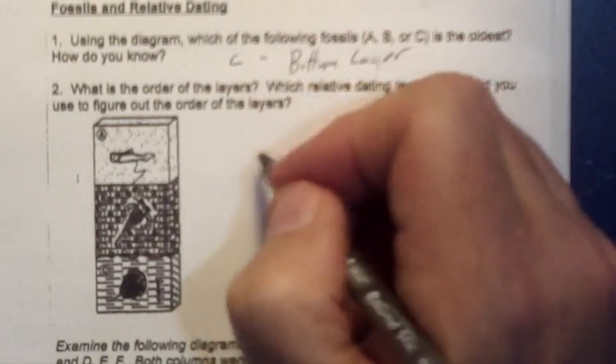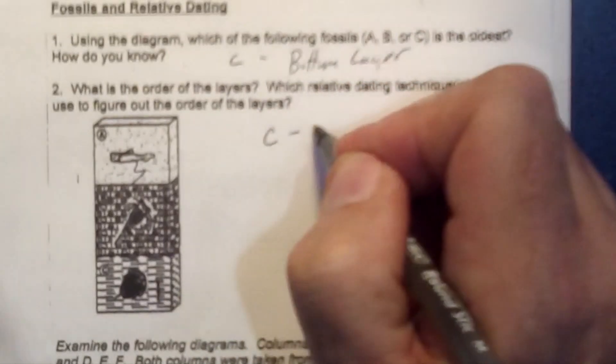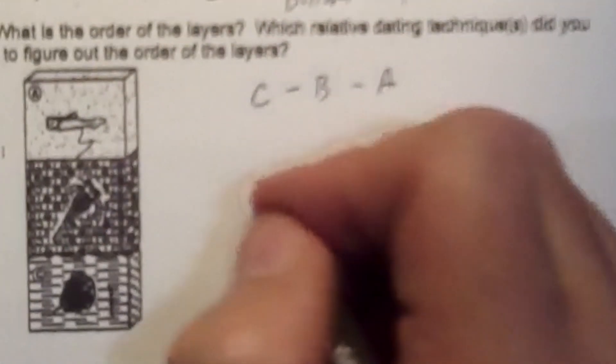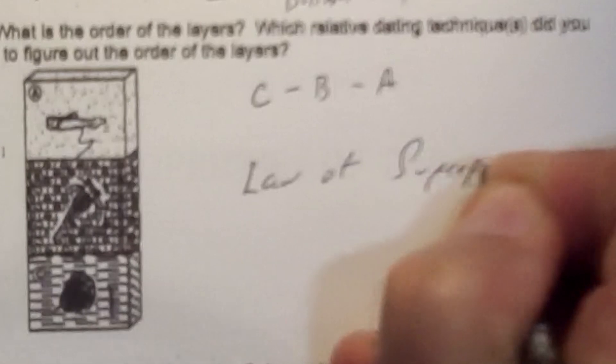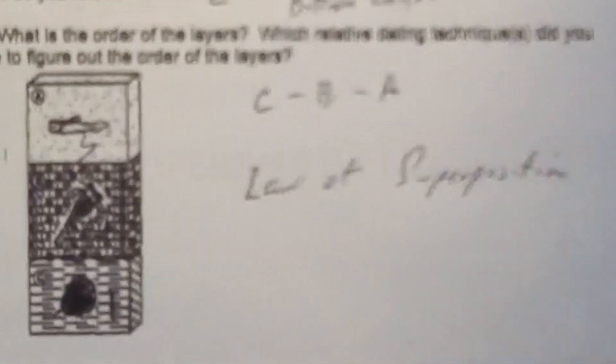What is the order of the layers? The order would be C, D, and A. And the technique I'm using for this is I'm using the law of superposition, which says the oldest is on the bottom.